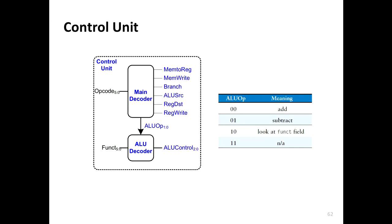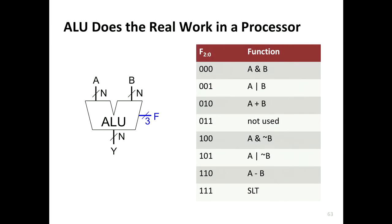Why do load word, store word, and branch equal go directly to add or subtract without looking at the function field? Because they're not R-type — you look at the function field only for R-type. For load word and store word you need addition; for branch equal you need subtraction. That's why ALUop is zero-zero or zero-one for those, and one-zero for R-type. When it's one-zero, you look into the function field to identify the specific ALU operation.